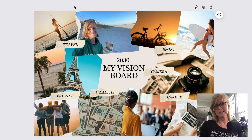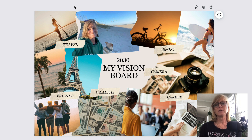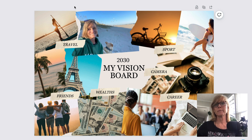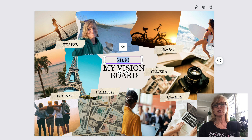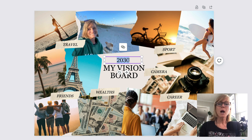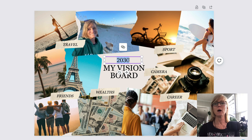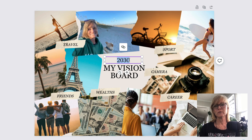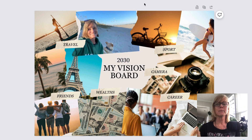Obviously I'm not just going to put a picture of myself on my vision board. What I would do next is go to the internet and look for the images of the things that I want to create in my life for however long this vision board is for. Some people like to do them for the year, others like to do them for 10 years out — like you'll see this one is a 2030 vision board. You can change this to whatever you want, however you want it to be. Let me show you how easy it is to grab images from the internet and use them with Canva.